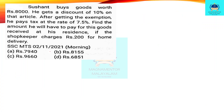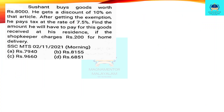Let's discuss the other questions. Sushant buys goods worth Rs. 90. He gets a discount of 10% on that article. After getting the discount, he pays tax at the rate of 7.5%. Find the amount he will have to pay for these goods received at his residence if the shopkeeper charges Rs. 200 for home delivery.